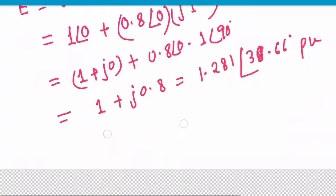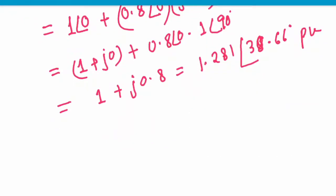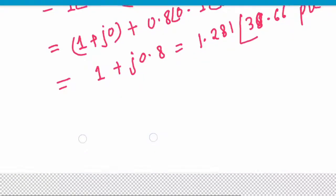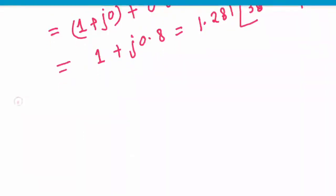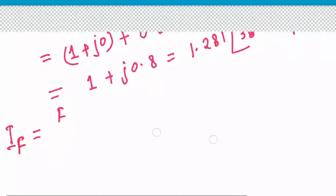E is 1.281 per unit. When a symmetrical short circuit fault occurs, the sub-transient reactance Xd double prime comes into picture. Xd double prime is the sub-transient direct axis synchronous reactance. The fault current will be determined by this reactance.